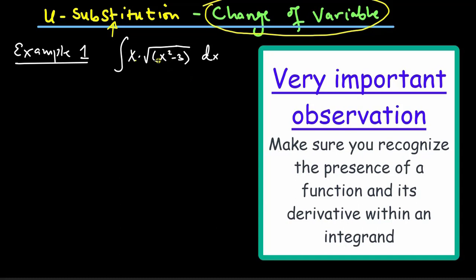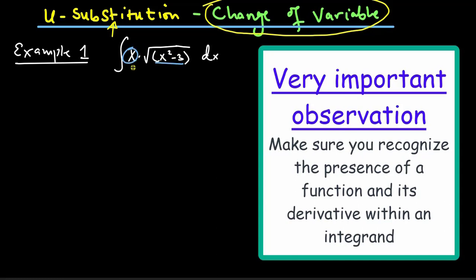In this example, if you take a deep analysis at the two parts — x and the square root of x squared minus 3 — you realize that if I take the derivative of what is inside the square root, x squared minus 3, somehow its derivative includes the x. So x squared minus 3 is the function and its derivative somehow involves the x. So this is the function and x is the derivative.